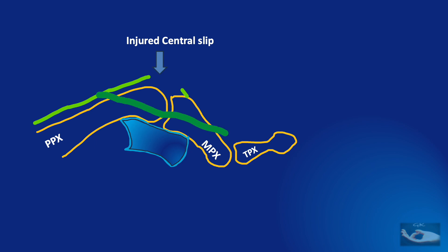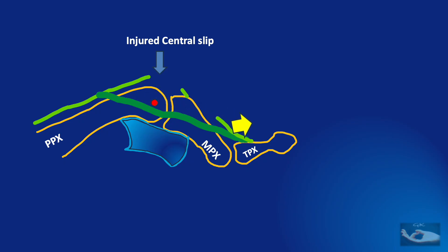When the PIP joint goes into flexion, the lateral bands present on both sides of the central slip will slip downward on the volar aspect to a point where they are even volar to the axis of the proximal interphalangeal joint. All the forces from the extensors are then directed through the lateral bands to the insertion at the base of the terminal phalanx, leading to hyperextension at the distal interphalangeal joint. The displaced lateral bands also begin to act as flexors of the PIP joint instead of supporting extension, because they are now volar to its axis.